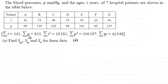Hi there. Now in this question we're given the blood pressures P in millimetres of mercury and the ages T years of seven hospital patients which are shown in this table below.